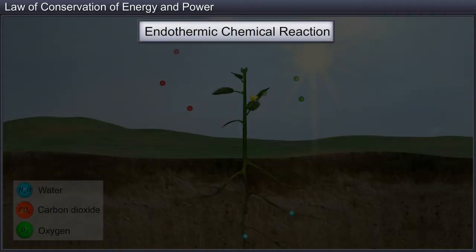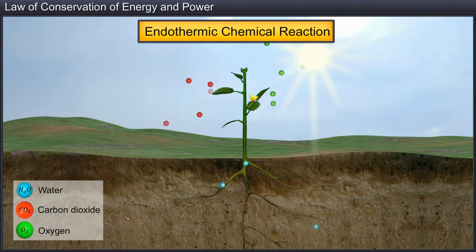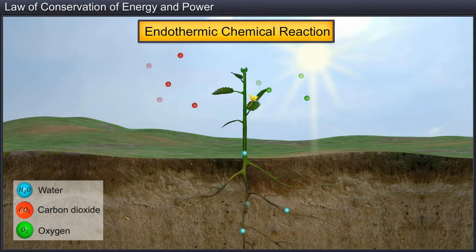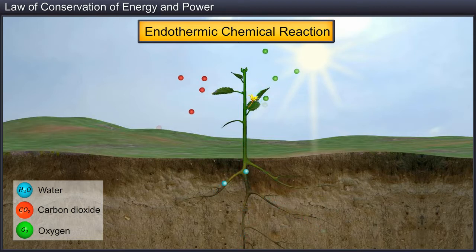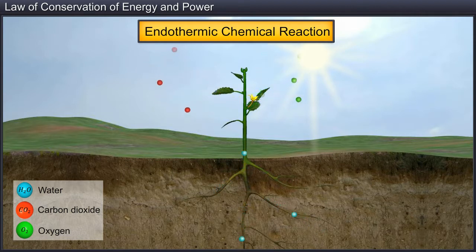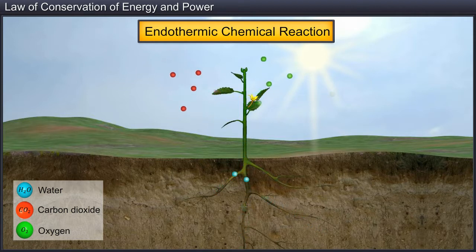There are some other chemical reactions that absorb heat during their reaction and are called endothermic reactions. Some reactions such as photosynthesis are endothermic reactions, which allow plants to make sugar from carbon dioxide in the presence of air. Chlorophyll acts as a catalyst in the process of photosynthesis. In this case, the energy required for the reaction comes from sunlight.